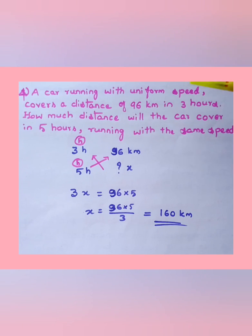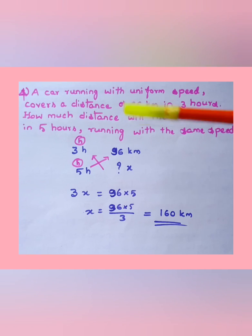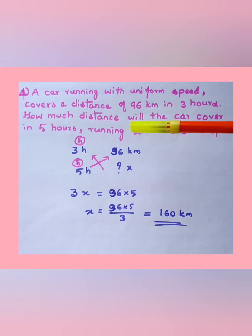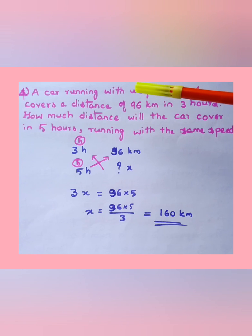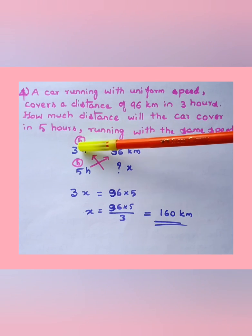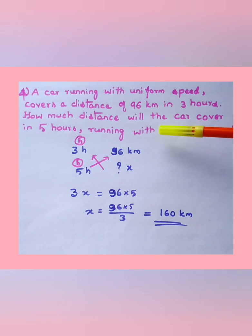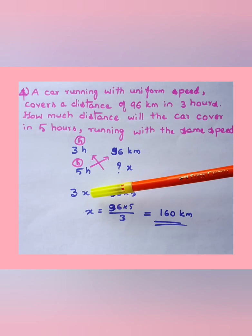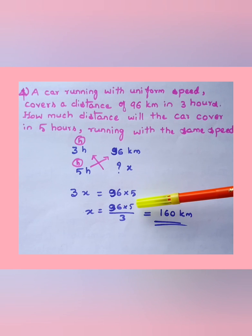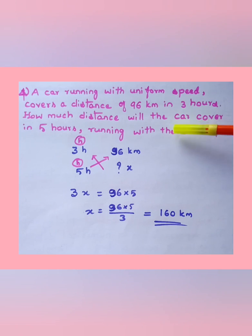Next: a car running with uniform speed covers a distance of 96 kilometers in 3 hours. How much distance will the car cover in 5 hours at the same speed? Write in column method: time = 3 hours, distance = 96 km. For 5 hours, distance = x. Cross multiply: 3x = 96 × 5, so x = (96 × 5) ÷ 3 = 160 kilometers. That is the answer.